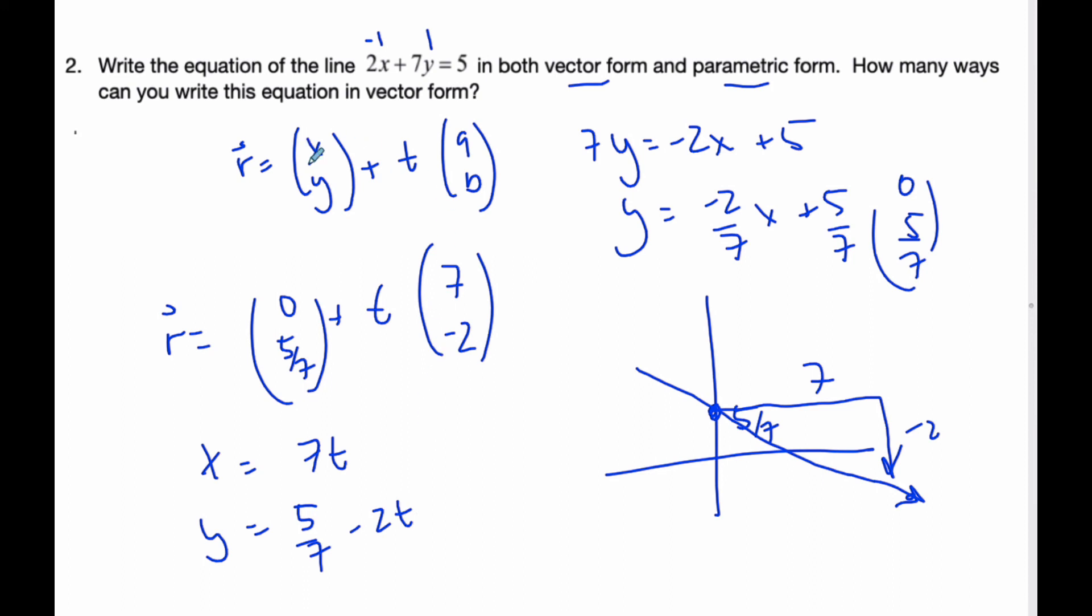And how many ways can I do it? Well, I could go along and just change this point here. And I could also go along and change this vector here. If I make the vector, let's say, twice as big as opposed to, I could make it 14 and negative 4. And I could use this point here, which I figured out, as negative 1, 1. And you can start to see that there are an infinite amount of ways of writing vector equations of lines.